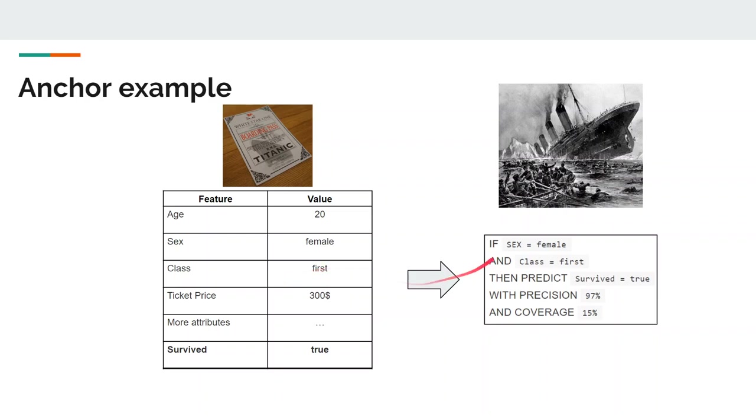The square on the right shows the generated ANCHOR, or rule, which is an easy-to-interpret rule with a precision and coverage measure. The result shows which attributes were taken into account by the model, which in this case is the female sex and the first class ticket. The ANCHOR additionally tells us that it applies to 15% of perturbation space instances. In those cases, the explanations are 97% accurate, meaning that the displayed predicates are almost exclusively responsible for the predicted outcome.